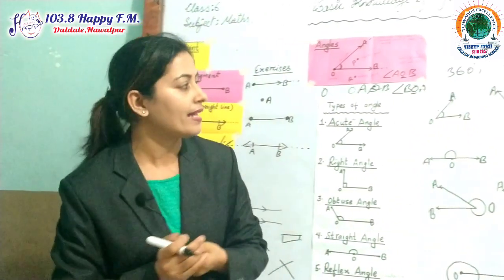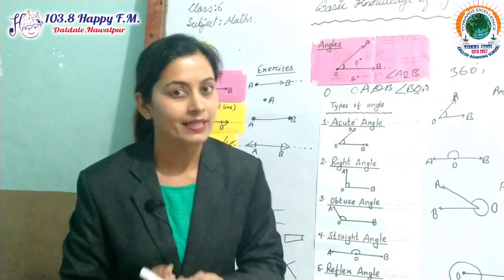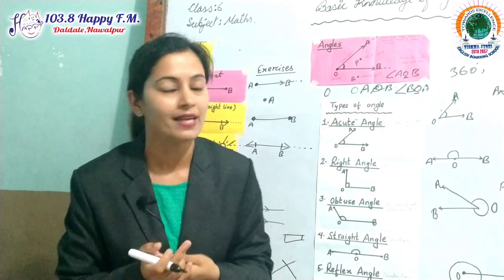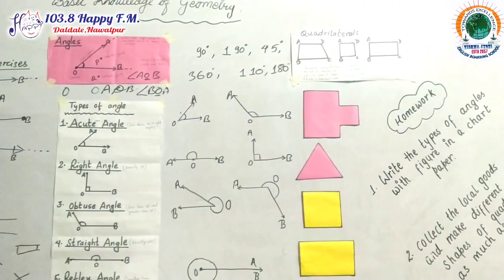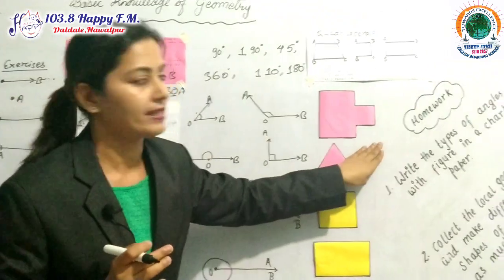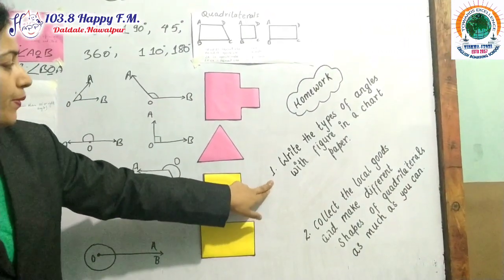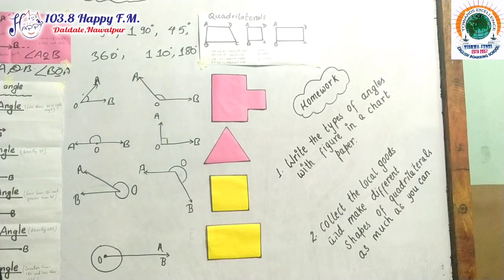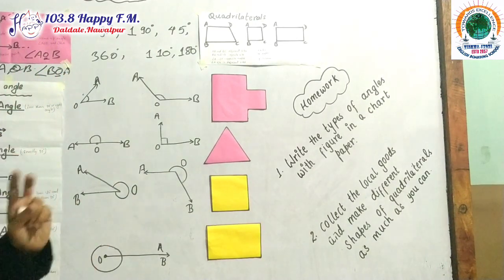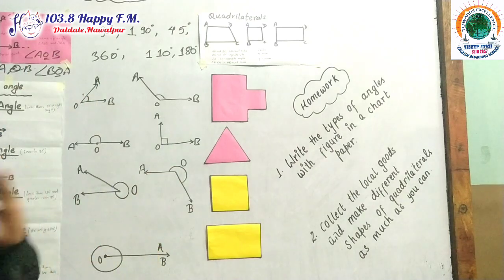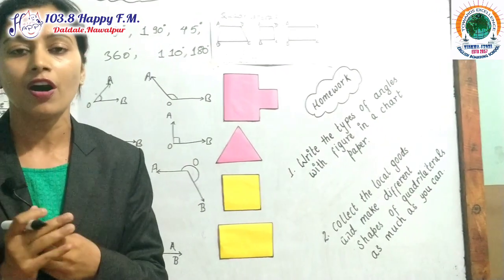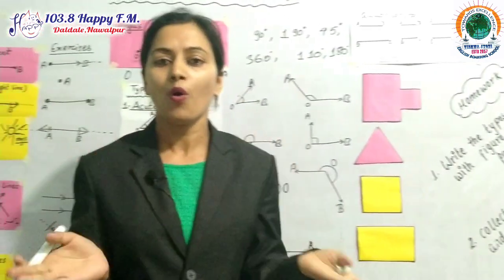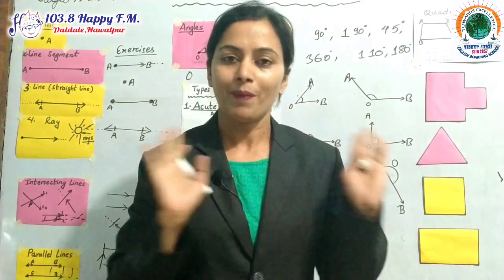Thank you, students — this much for today. We will visit new topics about quadrilaterals next time. Your homework is question number one: write the types of angles with figures on a chart paper. You can decorate it as well — that is your project work. Thank you. Stay home, stay safe. Bye-bye, students.